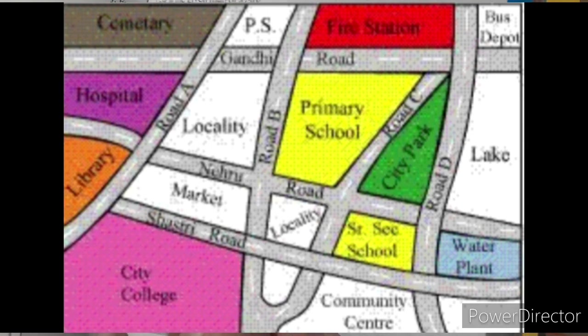Look at this. Here the blue water means lake is blue. Red fire station, orange library already colored that one. You just check it properly and color that map in your textbook.